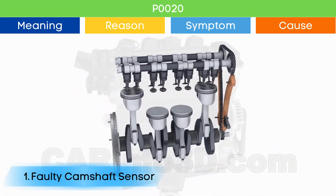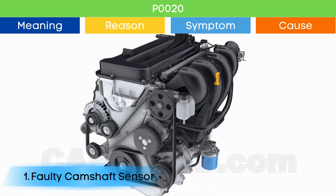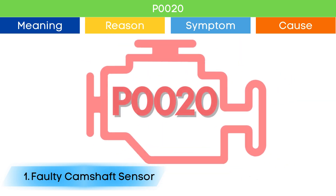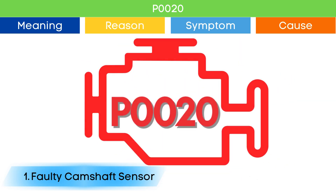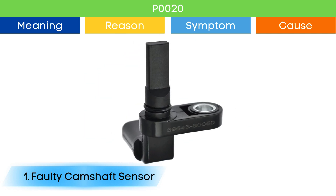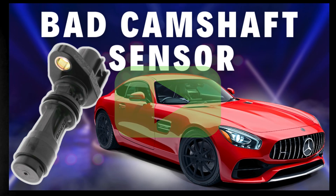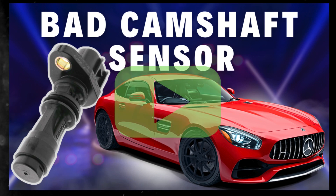Cause number one: bad camshaft position sensor. Due to a malfunction of the camshaft position sensor, the ECU may detect an engine timing error, which may trigger P0020 and other OBD2 codes related to camshaft position sensors, along with symptoms of a bad camshaft position sensor. Check our detailed video to learn more — link in the corner.